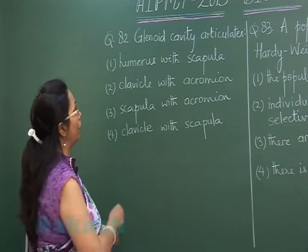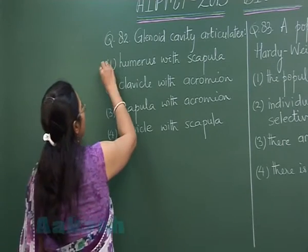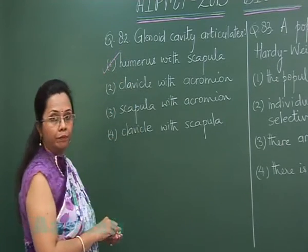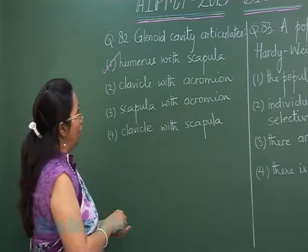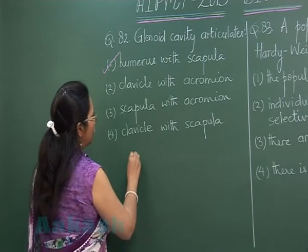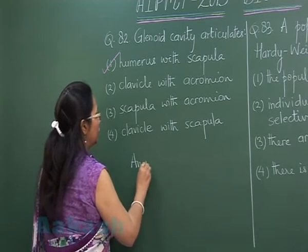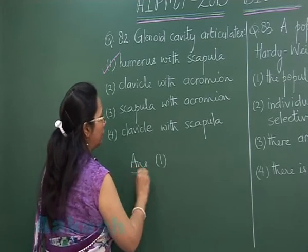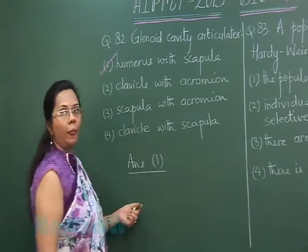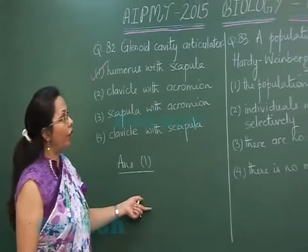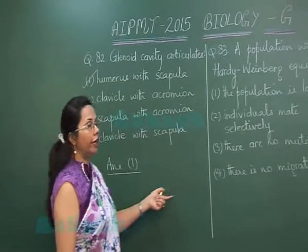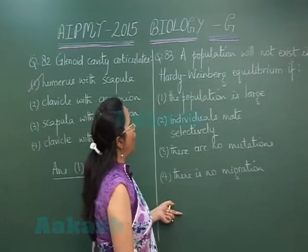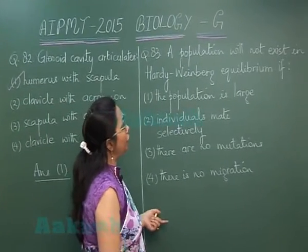So here the first choice — humerus with scapula — is itself the answer. Our answer is option 1.